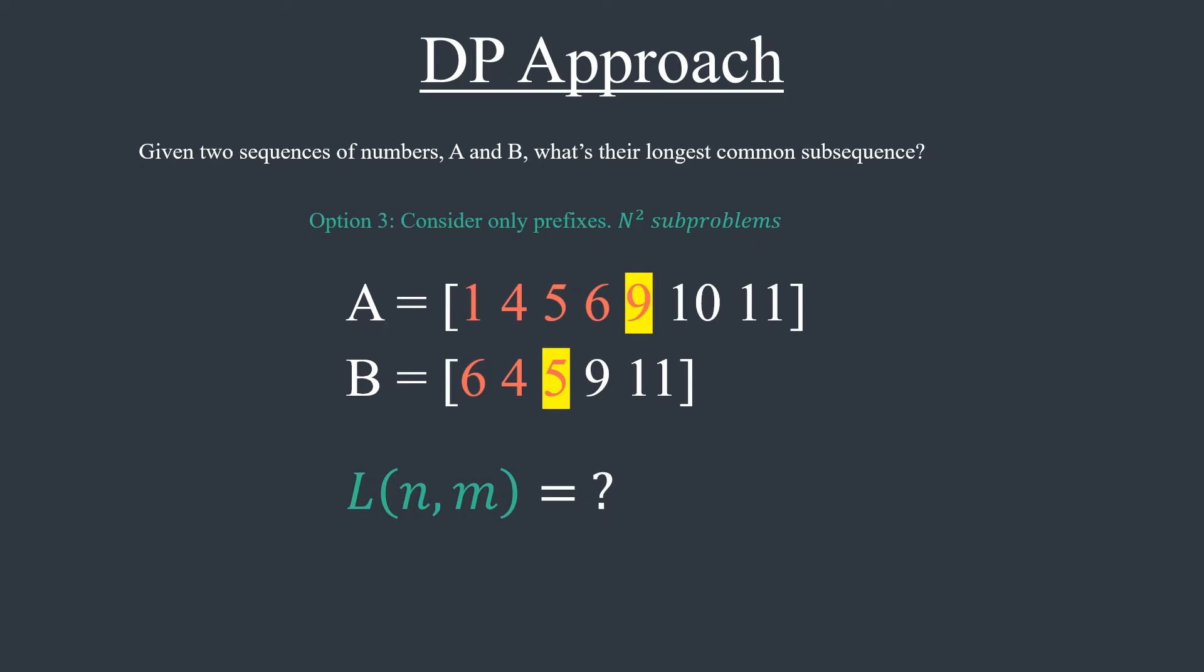There are two cases. These two numbers can be different, or they can be equal. The first case is easy. If the elements are different, like 9 and 5 in this example, then clearly we can't choose both because these are the last elements in the sub-problem. The common subsequence can finish with 9 or 5, but not with both.